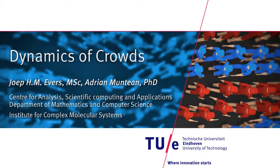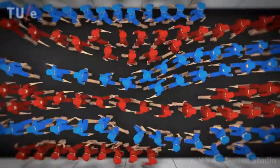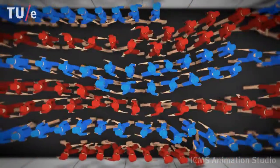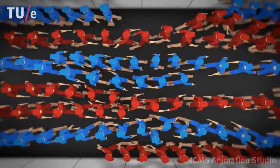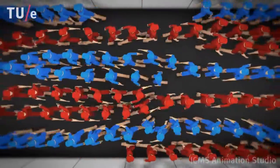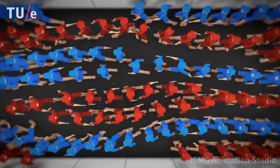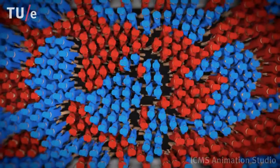Crowd Dynamics is the field of research that tries to mimic and predict the behavior of people when they are in a group. It turns out that one can reproduce realistic behavior by simulating a model containing only simple principles: intrinsic desired motion, repulsion from other people, and attraction towards fellow group members.